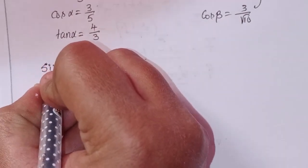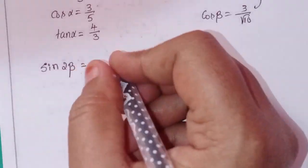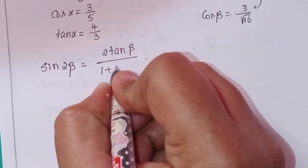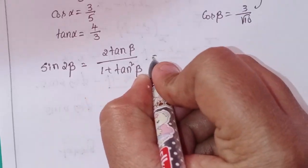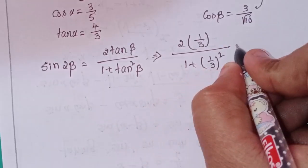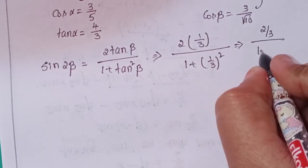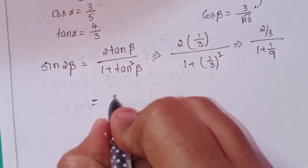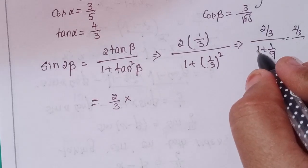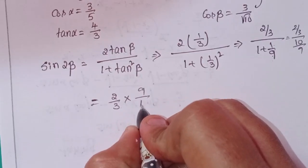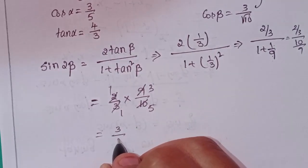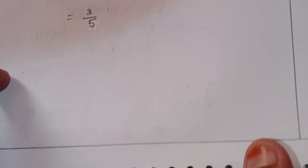Now find sin(2β) in terms of tan: sin(2β) = 2·tan(β) / (1 + tan²(β)). With tan(β) = 1/3: numerator = 2/3, denominator = 1 + 1/9 = 10/9. So sin(2β) = (2/3) × (9/10) = 18/30 = 3/5.